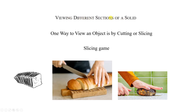To view the different sections of a solid, one way is by cutting or slicing, which is called a slicing game, or we can say kitchen play. For example, when you purchase a bread, you can see the bread is already sliced. When a bread loaf is cut vertically, we get this kind of bread that we are purchasing.